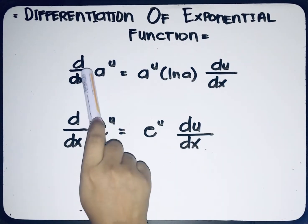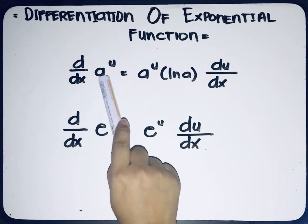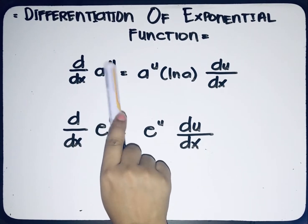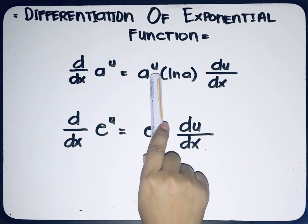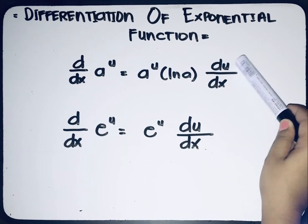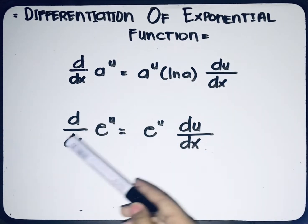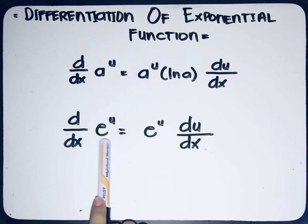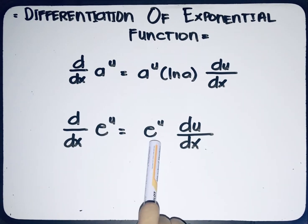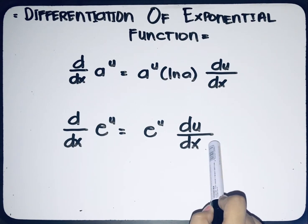The first formula is the derivative of a raised to u with respect to x, where a is any constant and u is any given function, is equal to a raised to u multiplied by ln(a) then multiplied by the derivative of u with respect to x. The second formula is the derivative of e raised to u with respect to x, equal to e raised to u multiplied by the derivative of u with respect to x.